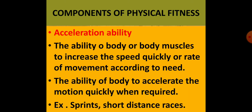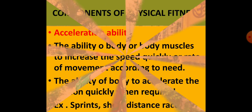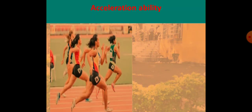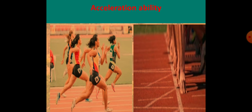In sprint races like the 100 metre race, the person has to run very fast but cannot run at maximum speed from the very start — in between, they must accelerate to maximum speed. In short distance races, acceleration ability is highly required. It decides the winner: how quickly the person reaches maximum speed determines the outcome.